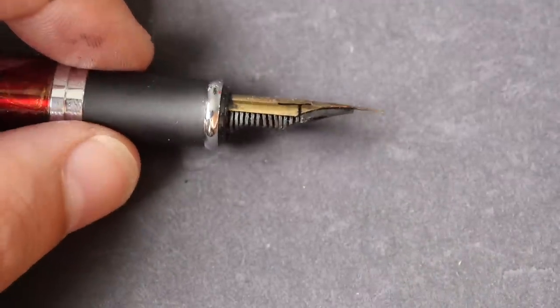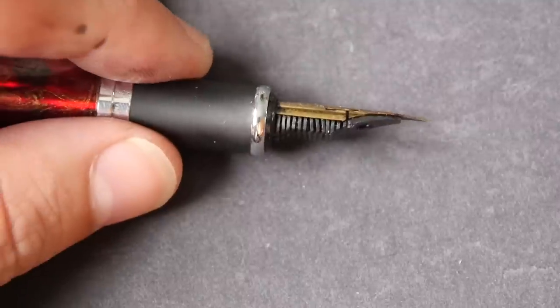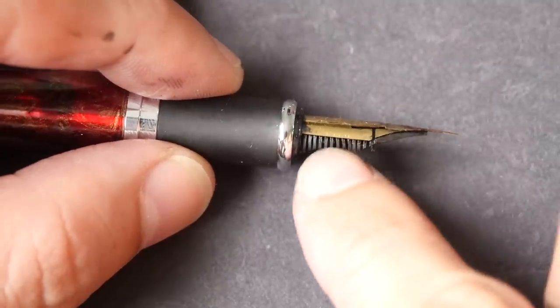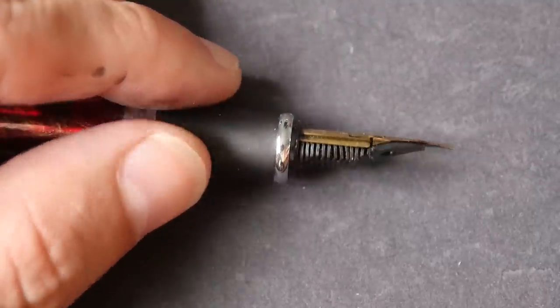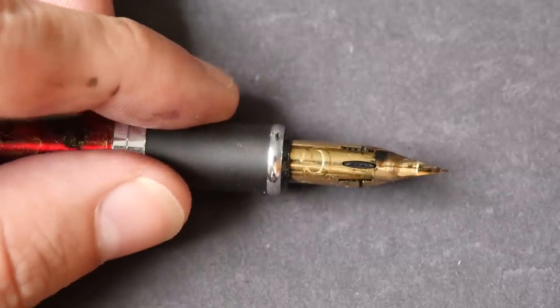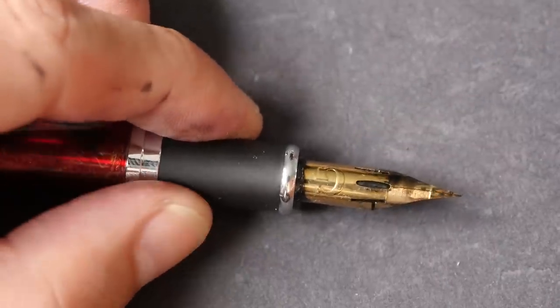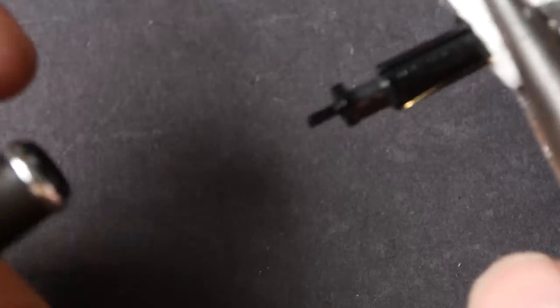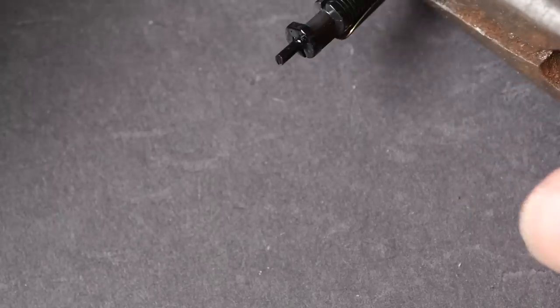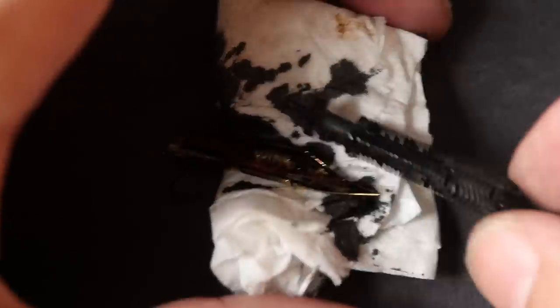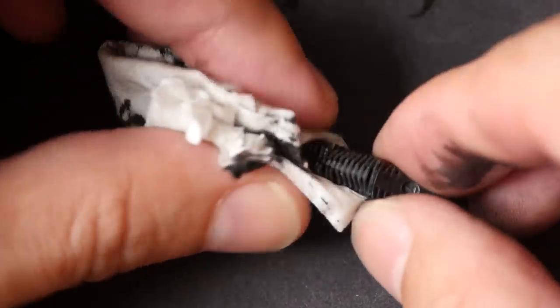When you are using the pliers to pull out the nib, make sure you don't use the pliers like this because it will bend the cuts below. You can see some of them are bent here. Try and use it like this and go at it like this instead so that the pliers do not damage the feed below. Let me try it again. Okay, it's finally out. Let me show you the feed. I think I damaged the feed a bit.